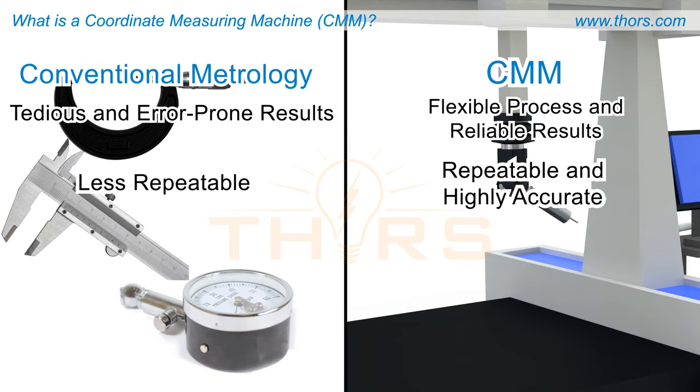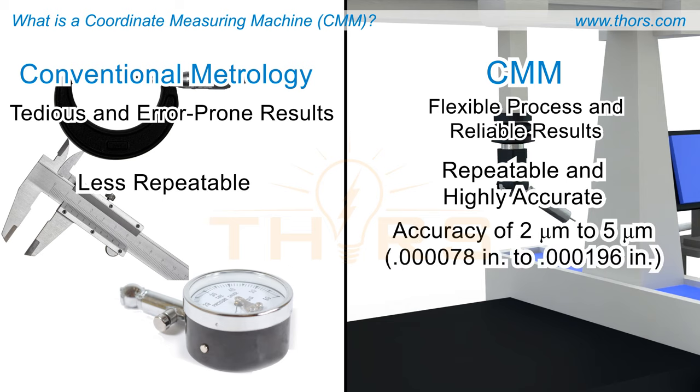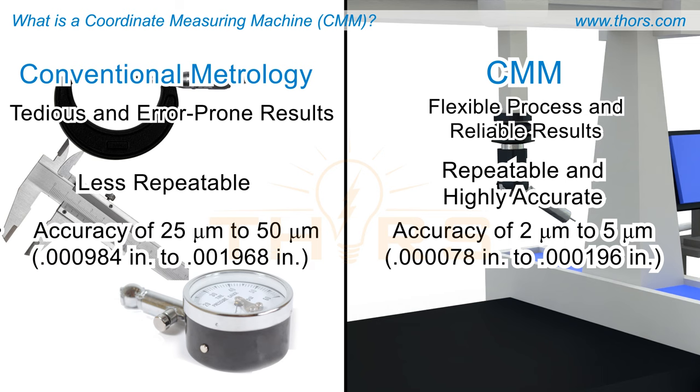Typically, a 1-meter bridge-type CMM offers an accuracy range of 2 microns to 5 microns, while on the other hand, conventional metrology produces an accuracy range of 25 microns to 50 microns.